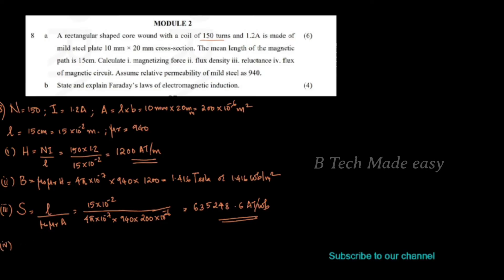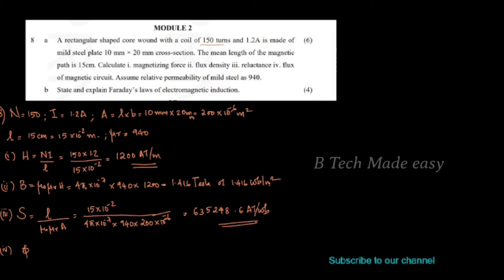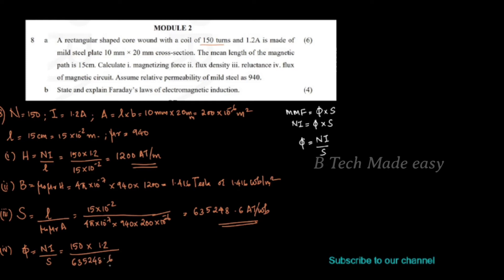For the fourth question, we have to find the magnetic flux. The MMF equals flux into reluctance, so flux equals NI divided by S. Substituting N equal to 150, I equal to 1.2, divided by S equal to 63,524.8 ampere-turns per Weber, the flux equals 2.83 into 10 raised to minus 4 Weber.